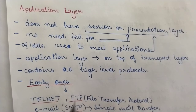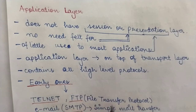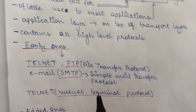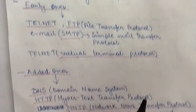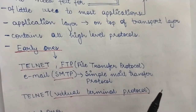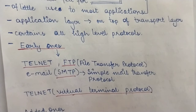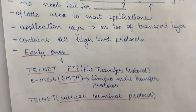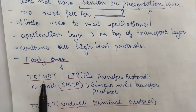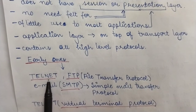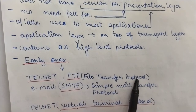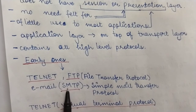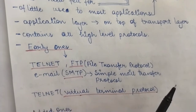On top of the transport layer is the application layer. It consists of all the higher-level protocols required for carrying out any conversation between source and destination, either on the same network or on different networks. Some early protocols were already there when the model was built, and new ones were added over time. The early protocols include Telnet, also known as the Virtual Terminal Protocol; FTP, the File Transfer Protocol; and SMTP, the Simple Mail Transfer Protocol.